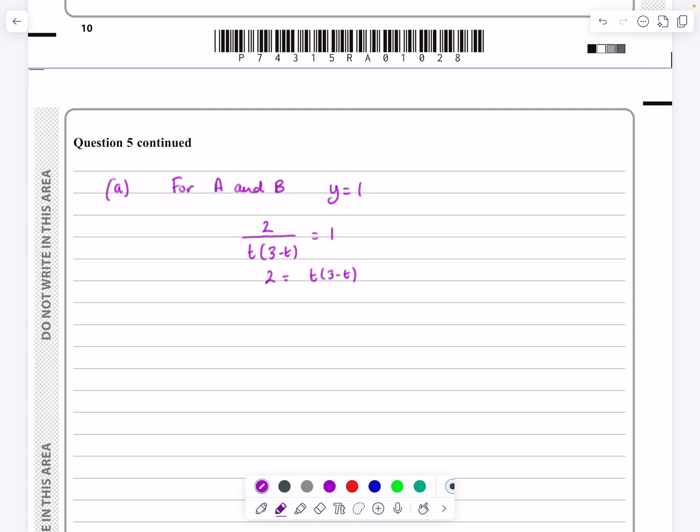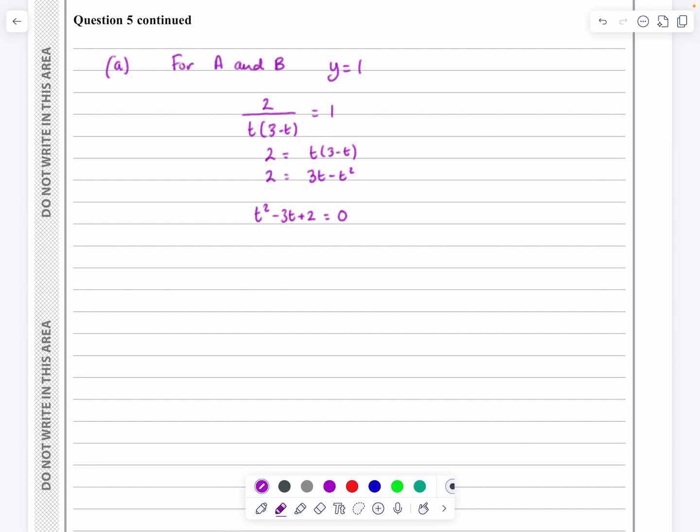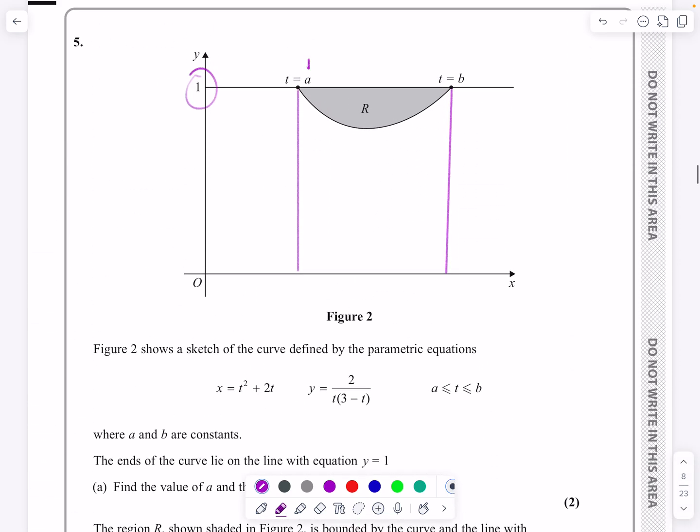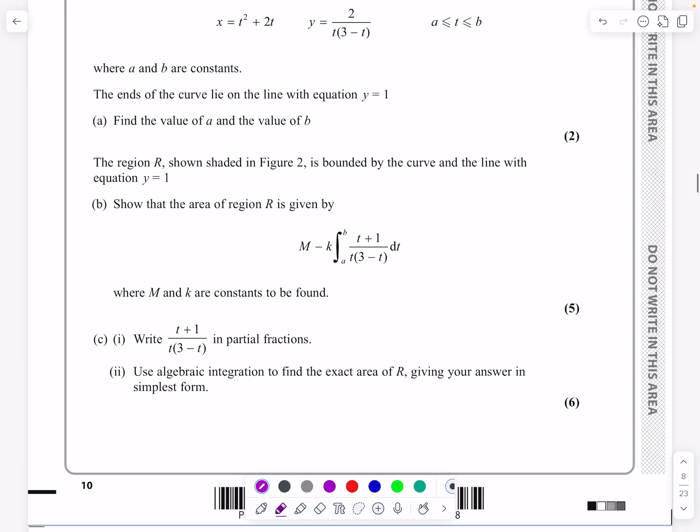It's going to give me two equals T times three minus T, multiply this out and turn it into a quadratic. So three T minus T squared, and tidy that all up to T squared minus three T plus two equals naught. I'll be very surprised if this one didn't factorize. So I'll have a go at that first, and yeah, it does, it factorizes to T minus two, T minus one, which is going to give me T equals one or T equals two as my two values here for A and B. Lovely. Okay, that's part A done.